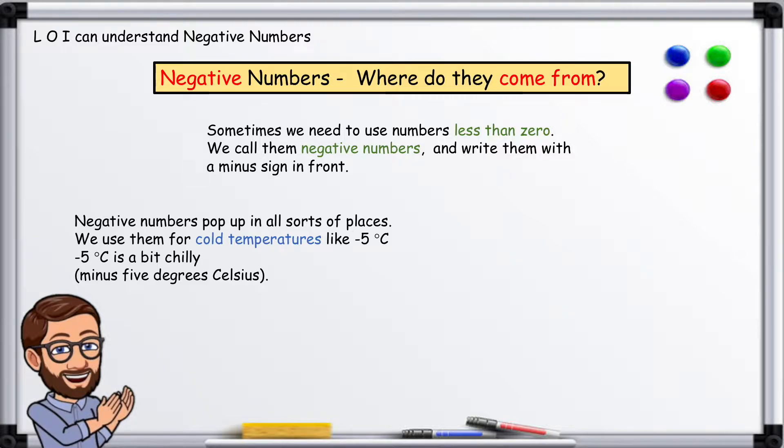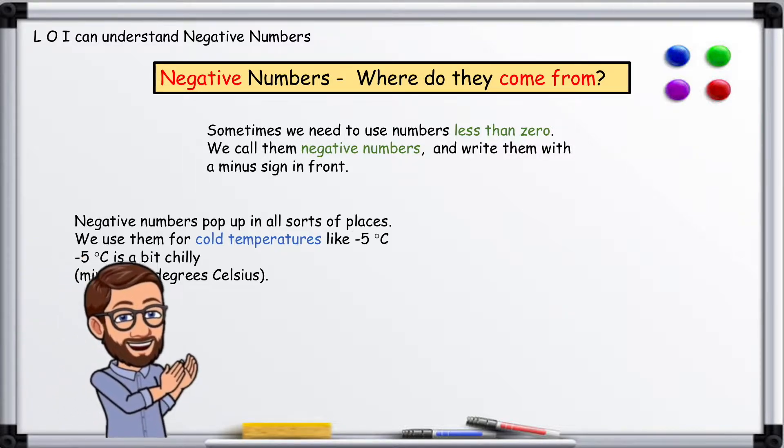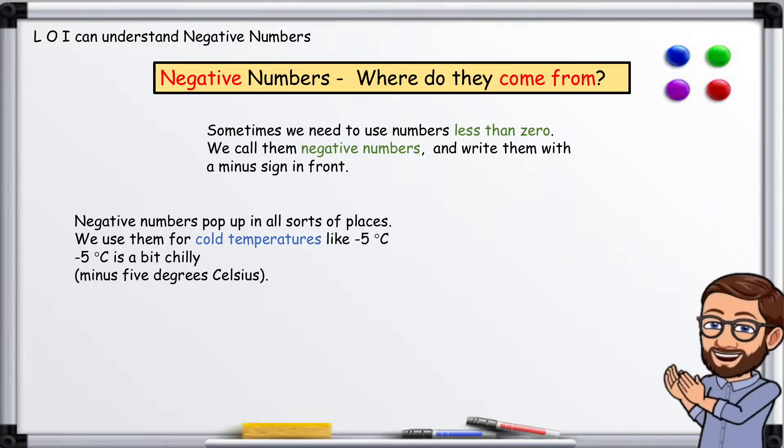Negative numbers pop up in all sorts of places. We use them for cold temperatures like minus five degrees. If you have negative ten pounds in the bank, then it means you owe the bank ten pounds. That's a shame really.